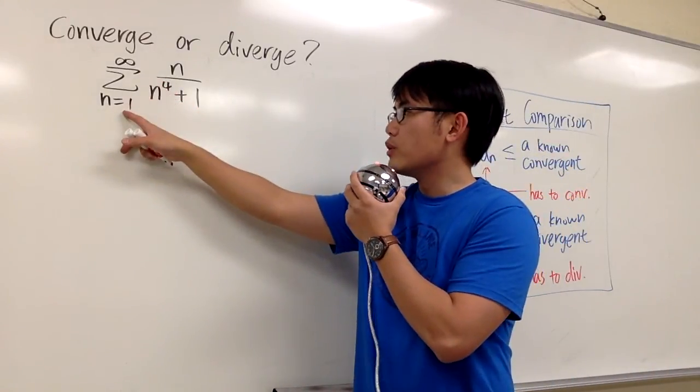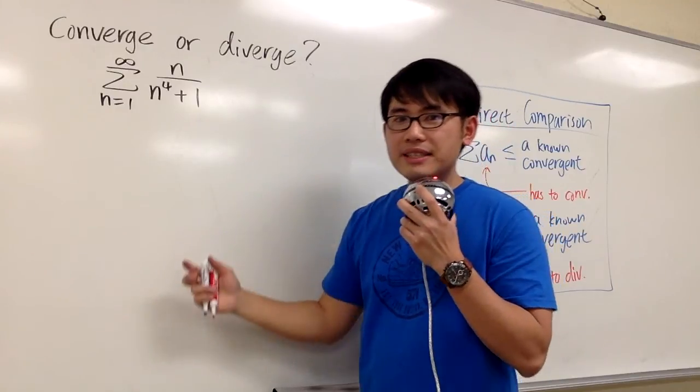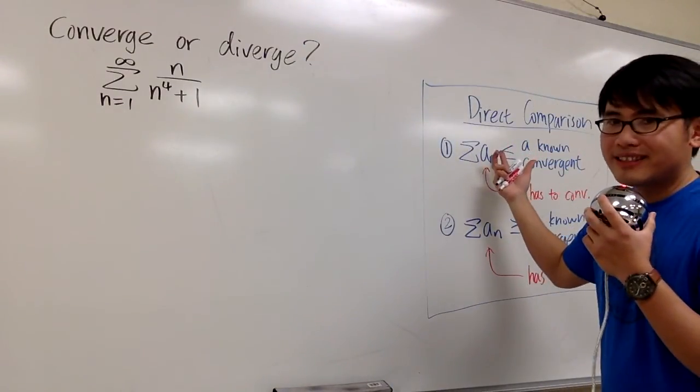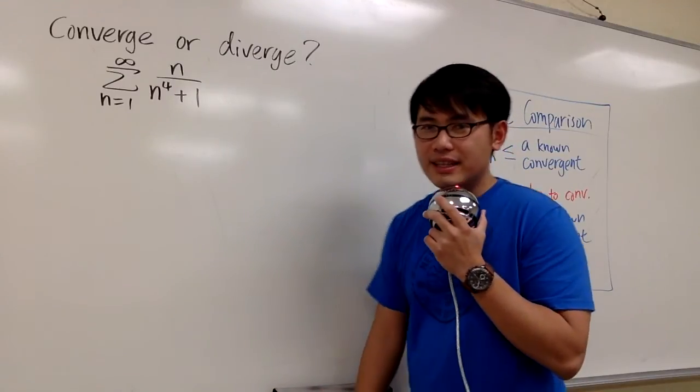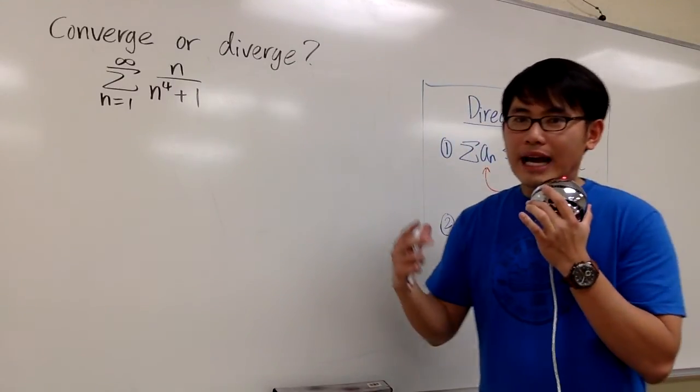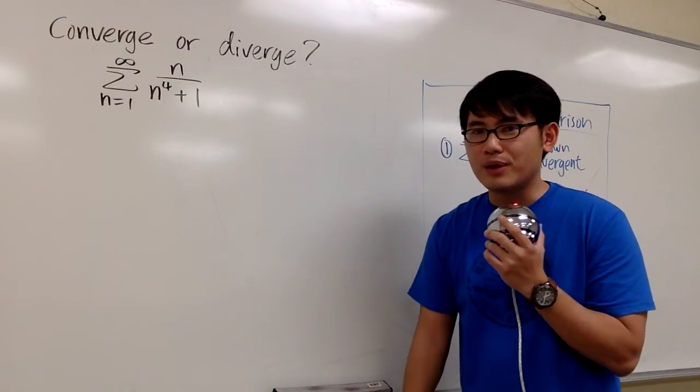Here we have sigma where n goes from 1 to infinity, n over n to the fourth power plus 1. In this video, we'll use the direct comparison test to show if this infinite series converges or not. I have another video that uses the integral test to show if it converges or not, so you can check that out as well.